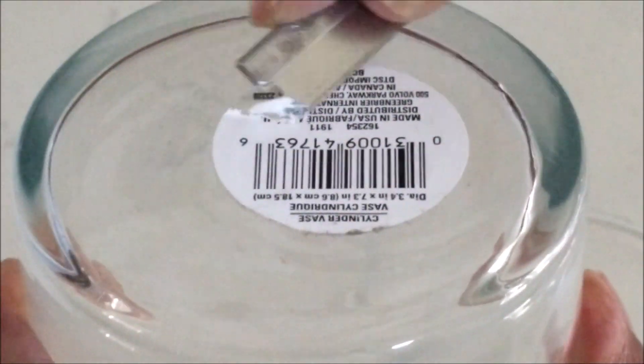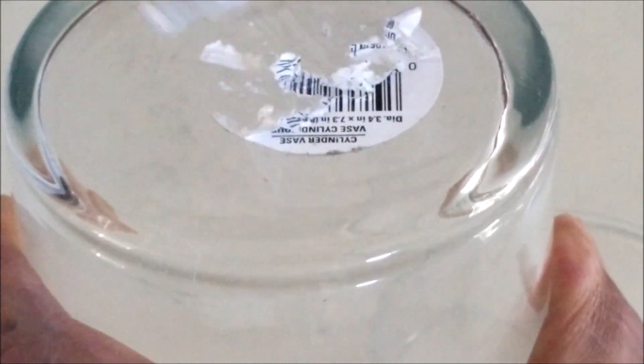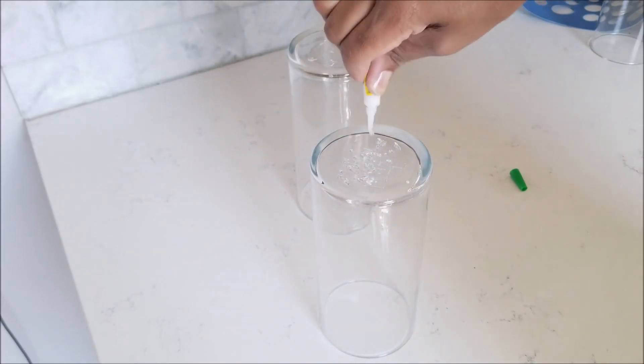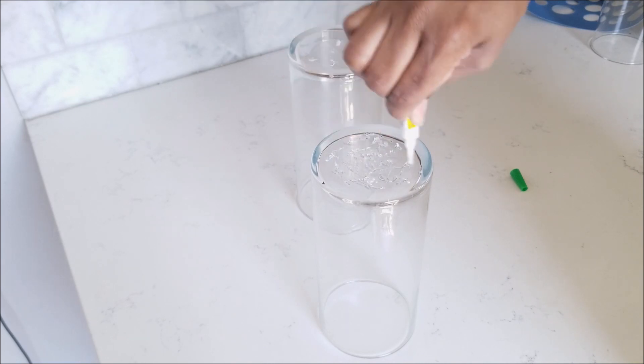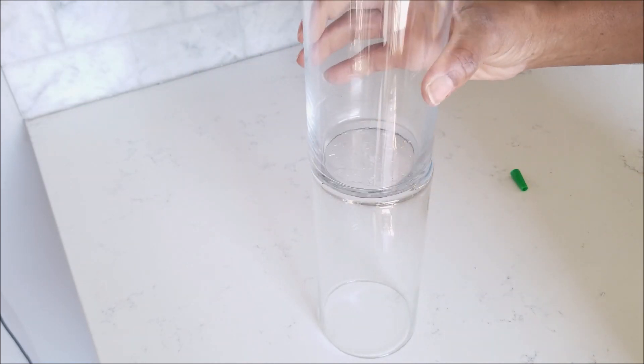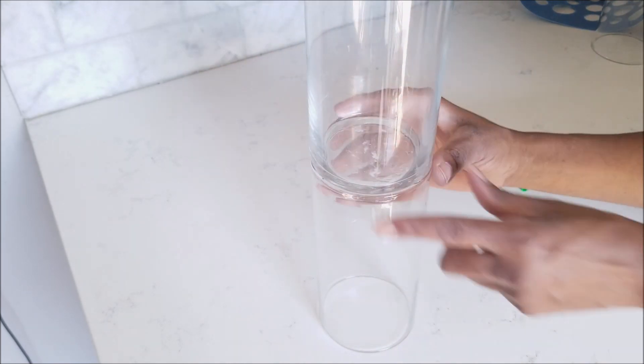With regards to the vase, we're going to start first by just cleaning that tag from the bottom. Then we're going to use that glue to glue them together, so you can glue them based on the height that you want. I had two of the tall ones together and two of the short ones.